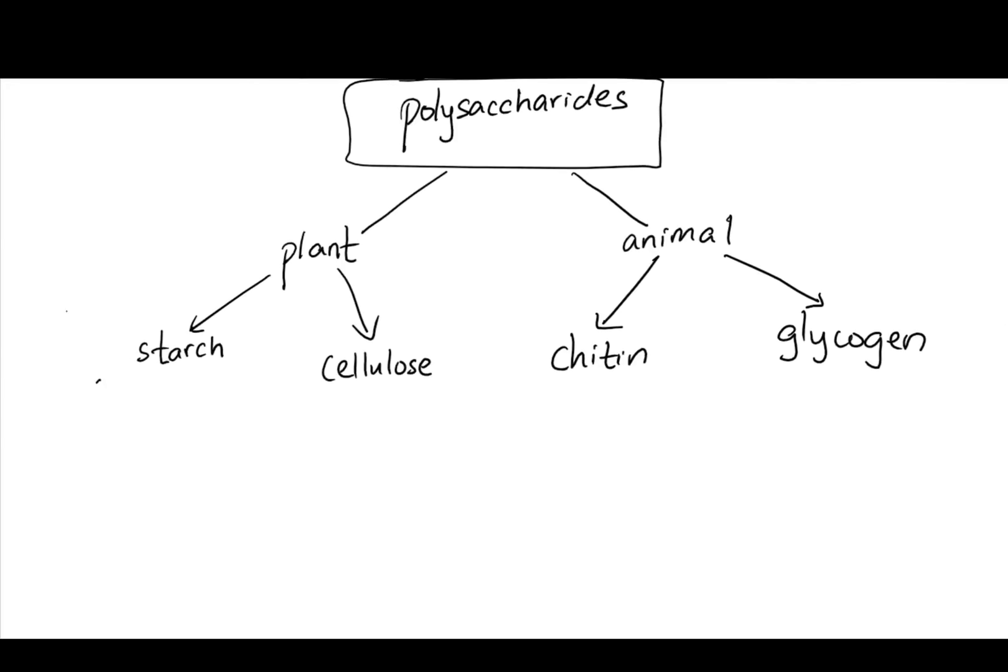All four of them are the polysaccharides of sugar form. So for starch, the main purpose is for the energy storage of plants. Some of the examples are potatoes and also beans. They are really rich in starch.